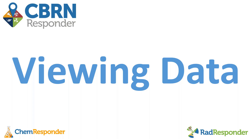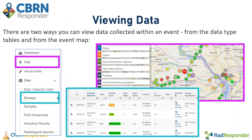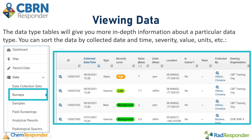Viewing data is going to be one of the most important parts of your event, and there are two ways you can view data collected within an event: from the data tables and from the event map. The data tables will give you more in-depth information about a particular data type. You can sort the data by collected date and time, by severity, by value, by units, and more.